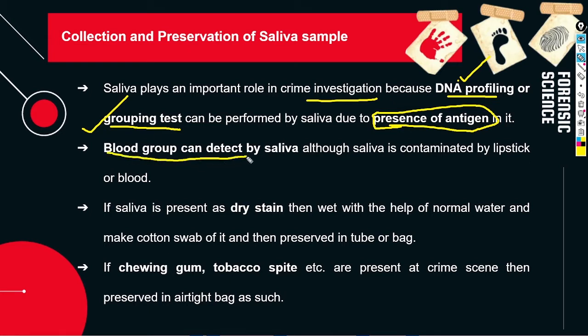We can detect the blood group from saliva. However, saliva is sometimes contaminated — it may be contaminated with lipstick, or it may be mixed with blood. So it can be contaminated in this form.